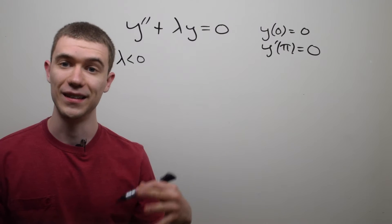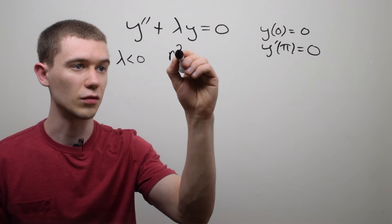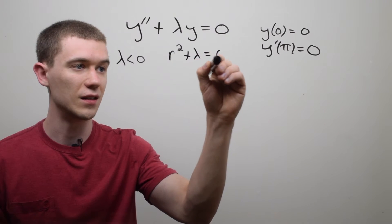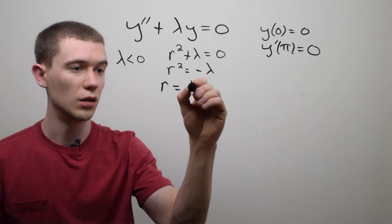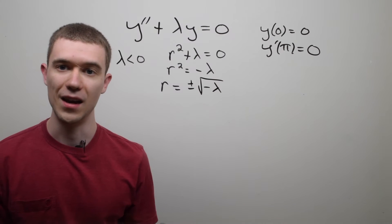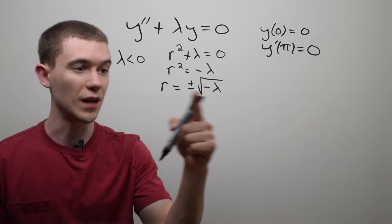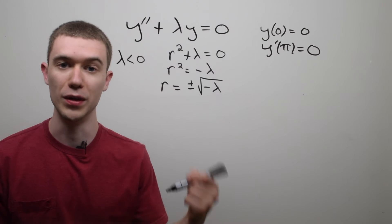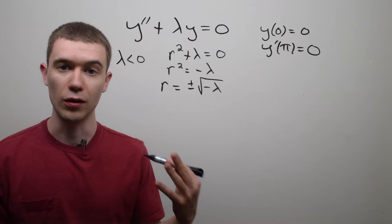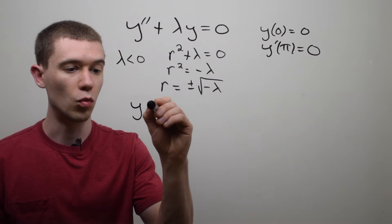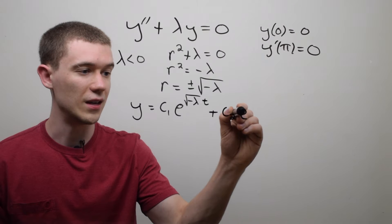What about if λ is negative? If λ is negative, this becomes something I can solve using techniques from earlier in your differential equations class. I reduce this to the auxiliary or characteristic equation r² + λ = 0, which means r² = −λ, or r = ±√(−λ). Now this might look a little weird, but remember λ is negative, so this is really a positive inside the square root — in other words I'm getting two real roots.